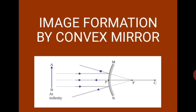How about the size of the image? The size of the image is diminished. The object is a big object AB and the image formed is a point image at F. Thus, the light rays coming from infinity form an image at F which is diminished, virtual and erect.